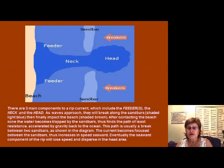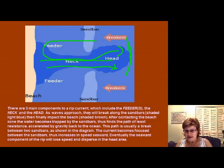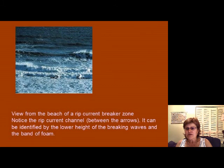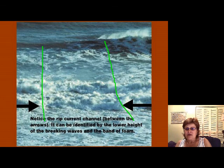The wave breaker will be out further in the area of the rip current, and this area will always be a darker color. If you're a little lucky, you can tell it's a rip current. Here is a picture and a close-up showing a rip current — you can see it really disrupts the breakers in the area of the rip current.